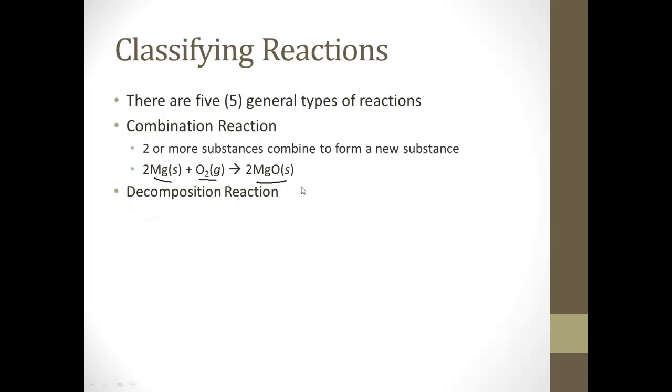The next kind is called a decomposition reaction. If you remember decomposition from biology last year, it's things being broken down. A decomposition reaction is where a single compound breaks down into two or more simpler products. For example, 2HgO, mercury oxide, breaks down into mercury and oxygen. Single compound, two or more simpler products.